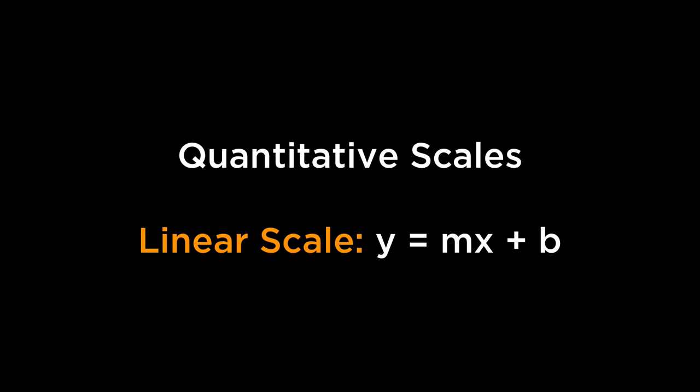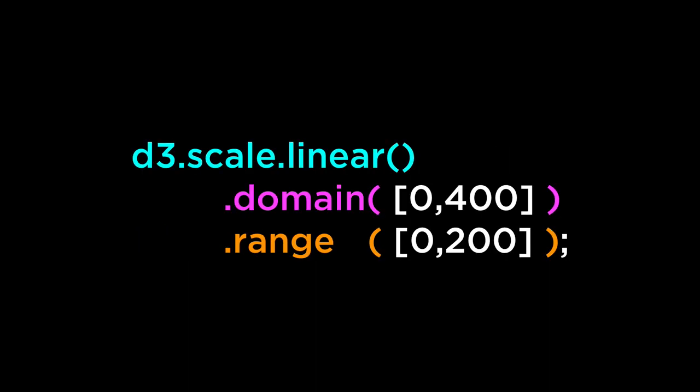D3 quantitative scales are for continuous input domains such as numbers. The mapping is linear in that the output range value y can be expressed as a linear function of the input domain value x, so we get y equals mx plus b. Rather than having to do this math ourselves, we can get D3 to do the math for us. Using D3 scale linear, we can tell D3 that the initial data covers 0 to 400 and we want it to cover 0 to 200 after it has been scaled. This figures out the correct math for the y equals mx plus b equation.